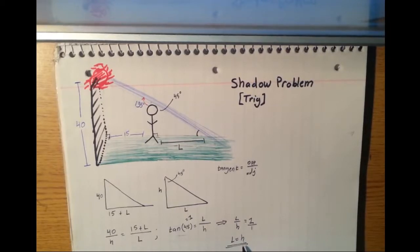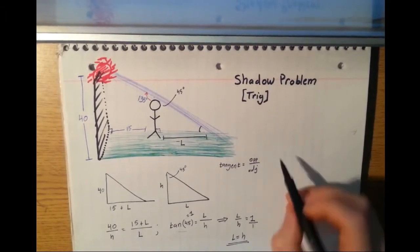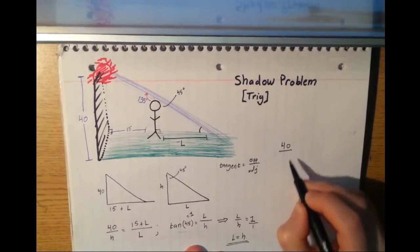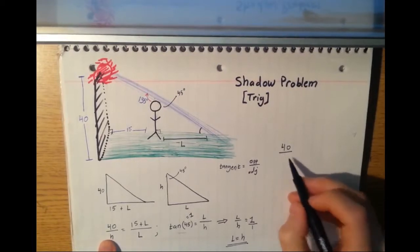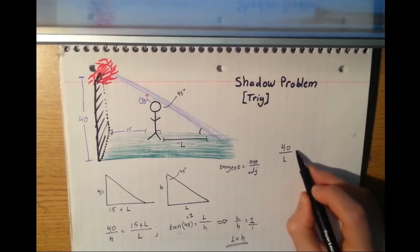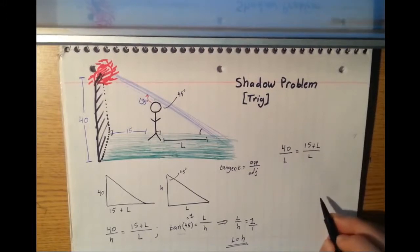Okay, now that I have L equaling H, I can substitute that back in for this equation right here. Let's do that up here. So I have 40, and I'm going to substitute in L. I'll substitute in L because we only have one H here. We have 40 over L equals 15 plus L over L.